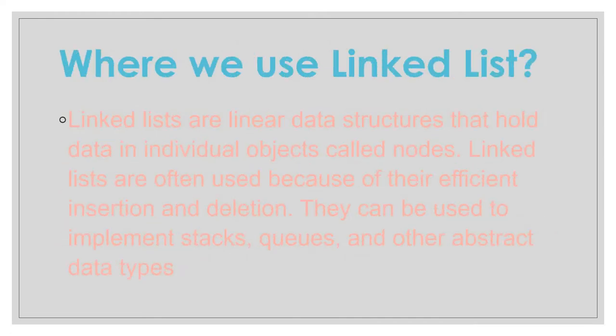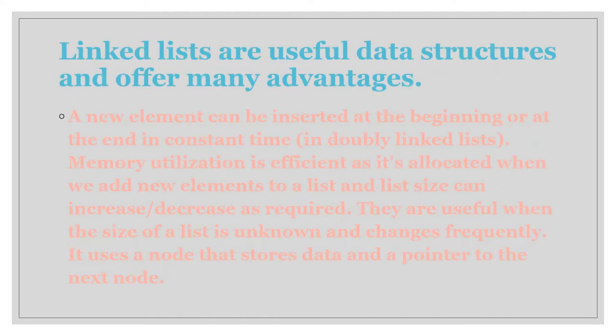Where do we use linked lists? Linked lists are linear data structures that hold data in individual objects called nodes. They are often used because of their efficient insertion and deletion, and they can be used to implement stacks, queues, and other abstract data types.